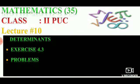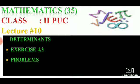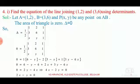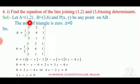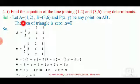Hello students, welcome back. Today I am going to solve a few more examples from Exercise 4.3. Let me begin with the first question: find the equation of the line joining the two points (1, 2) and (3, 6) using determinants. Let me begin with A equal to (1, 2) and B equal to (3, 6).